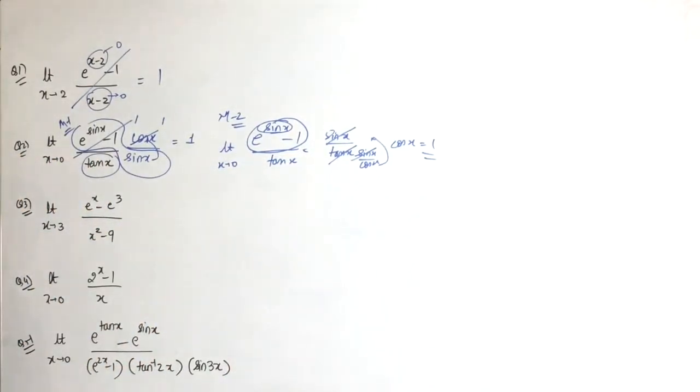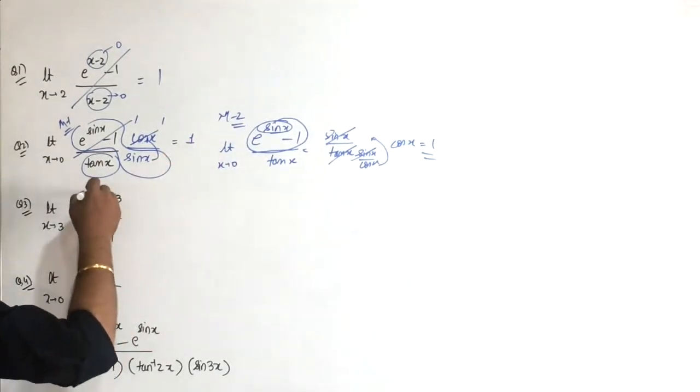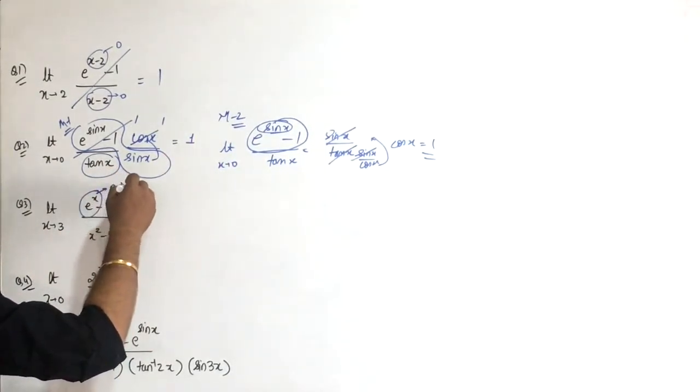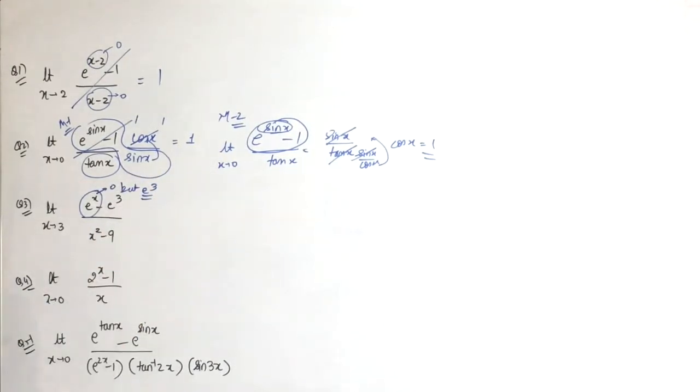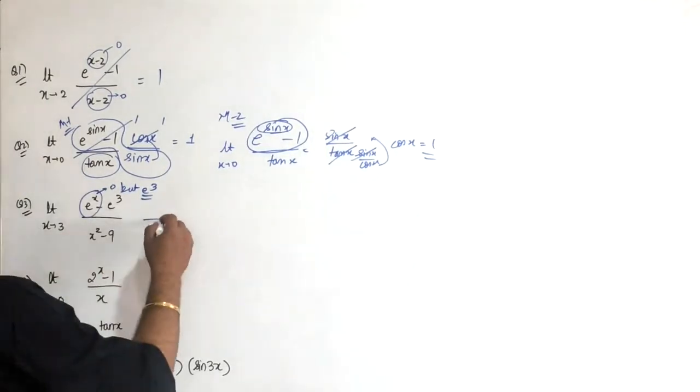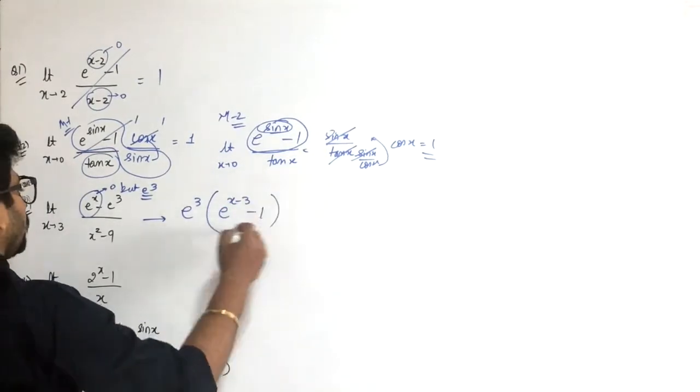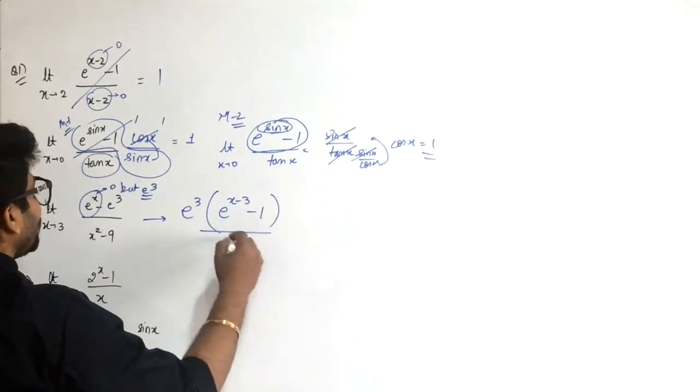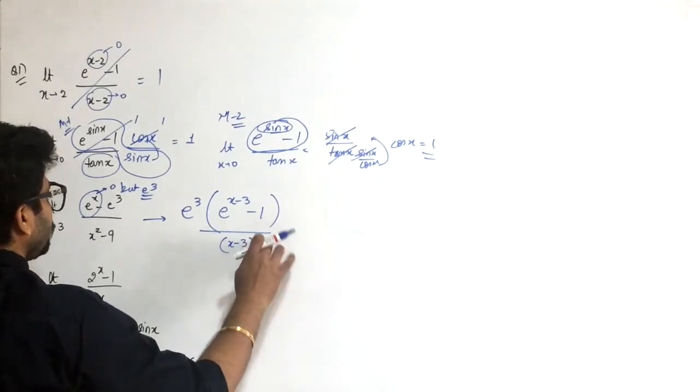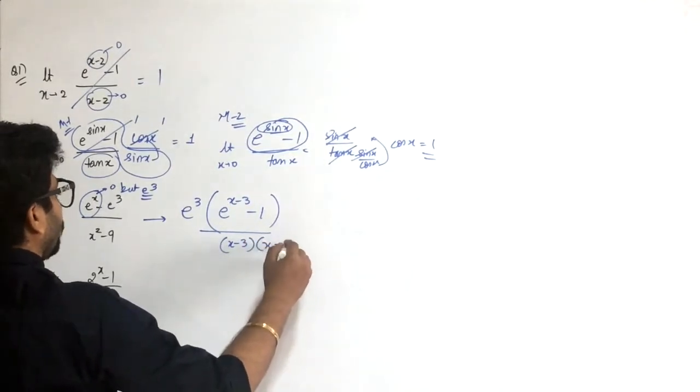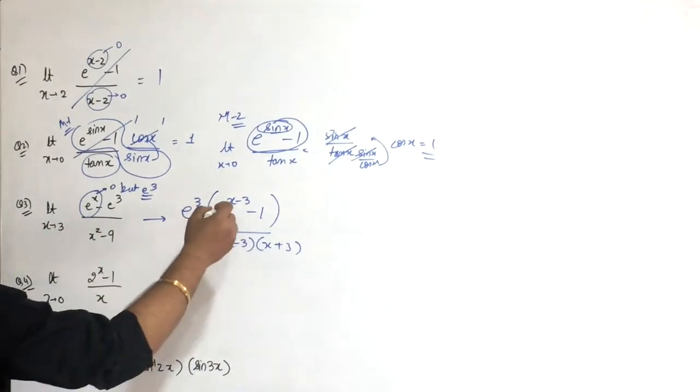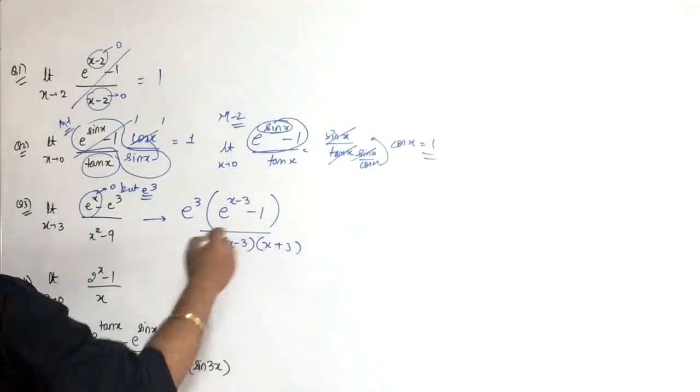Next question: e to the x minus e to the 3 upon x square minus 9. Let me check - this approaches 0 by 0. Take e to the 3 common, so you get e raised to power x minus 3, minus 1, upon x minus 3, times x plus 3. I've factorized x square minus 9.